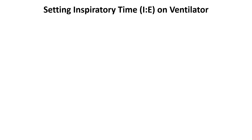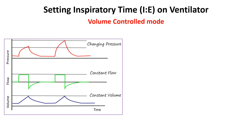Let's start with volume control mode. Volume-controlled ventilation is a mode of mechanical ventilation in which the ventilator delivers a preset constant tidal volume to the patient during each breath. Since the ventilator delivers a fixed tidal volume, the inspiratory time depends on how fast or slow that volume is delivered at a certain flow rate. To quantify the relationship between flow rate, tidal volume, and inspiratory time, we use this formula.